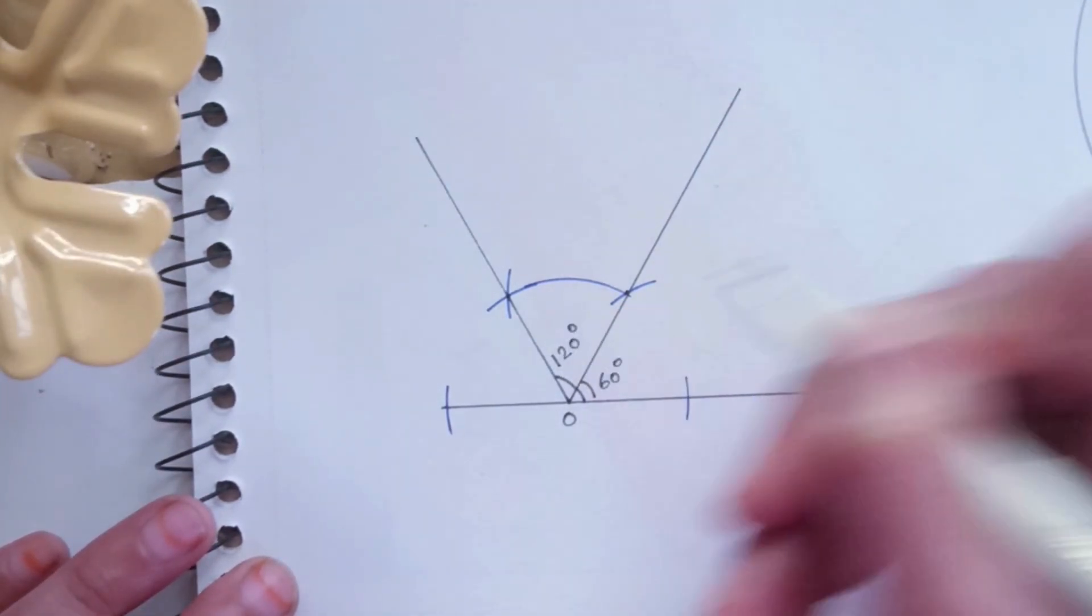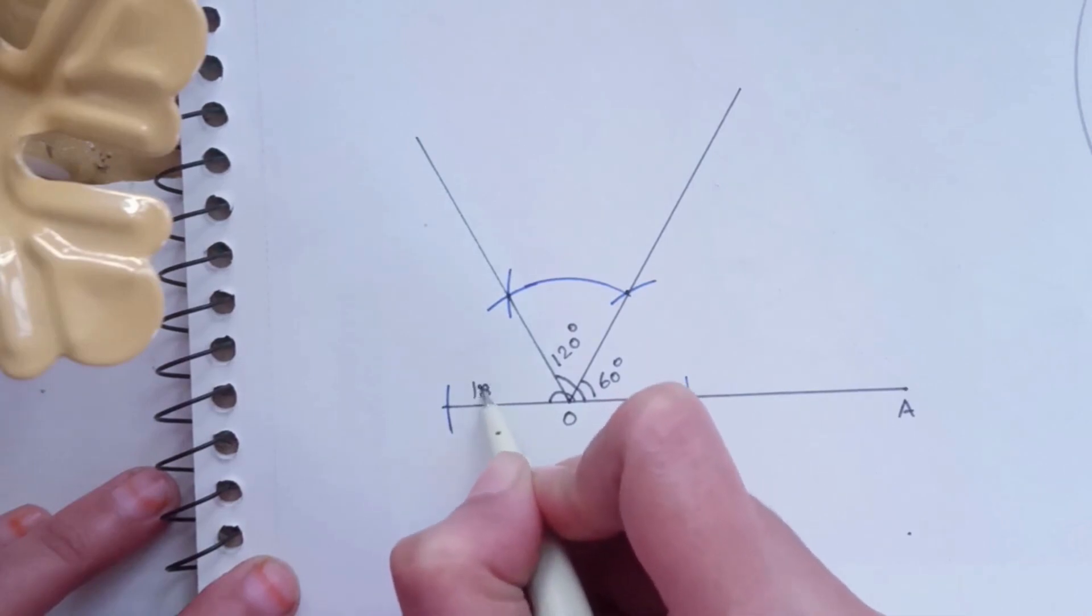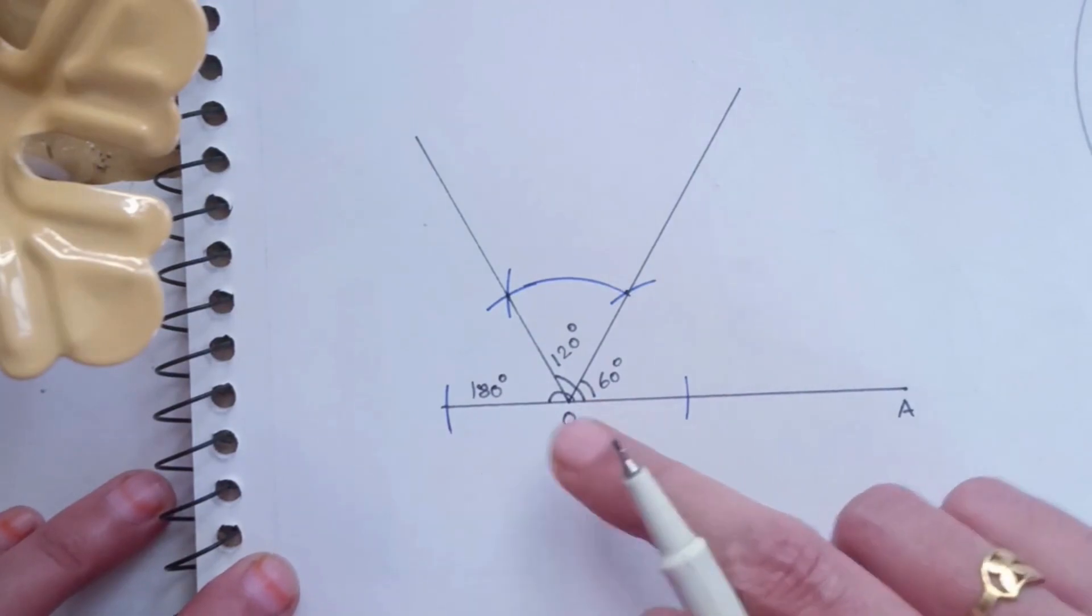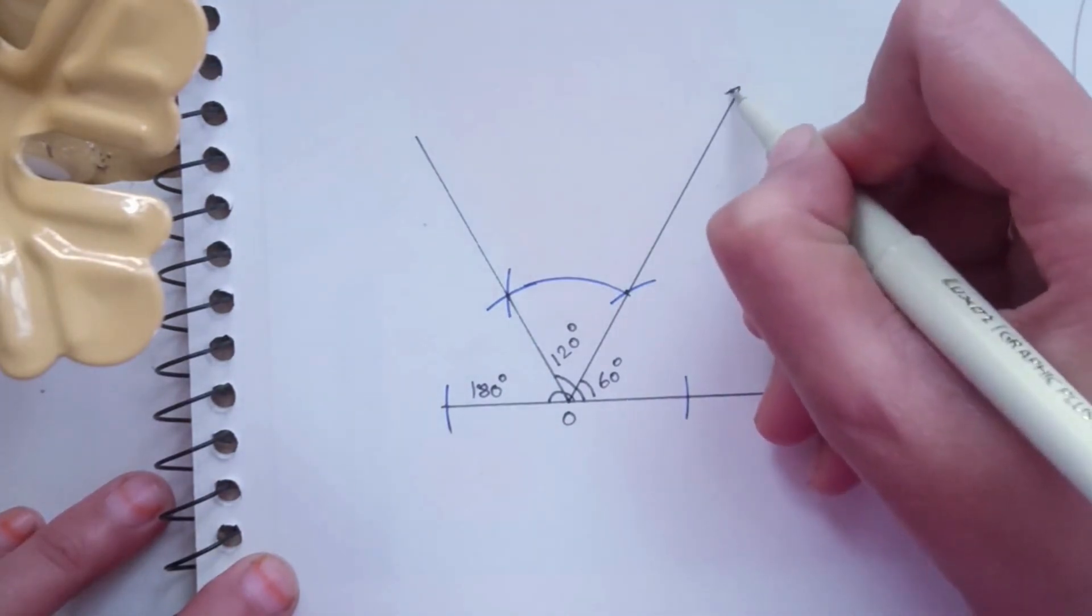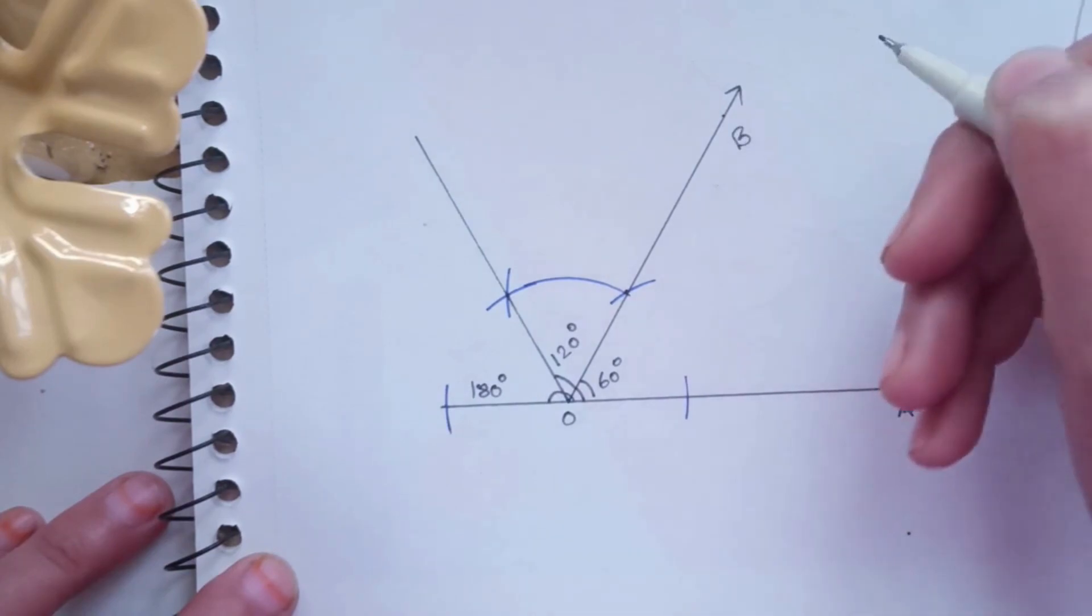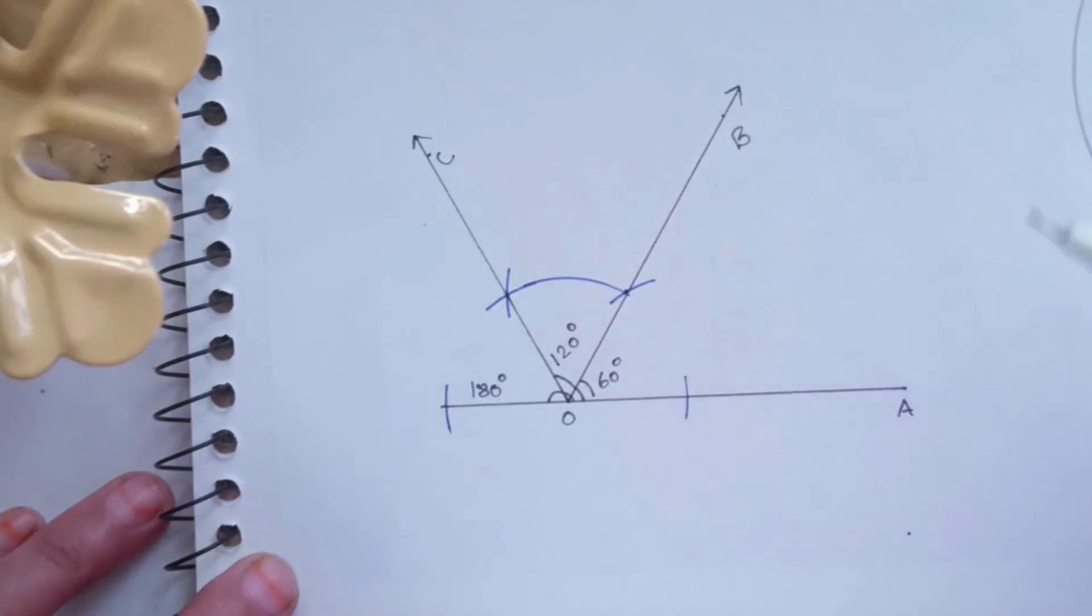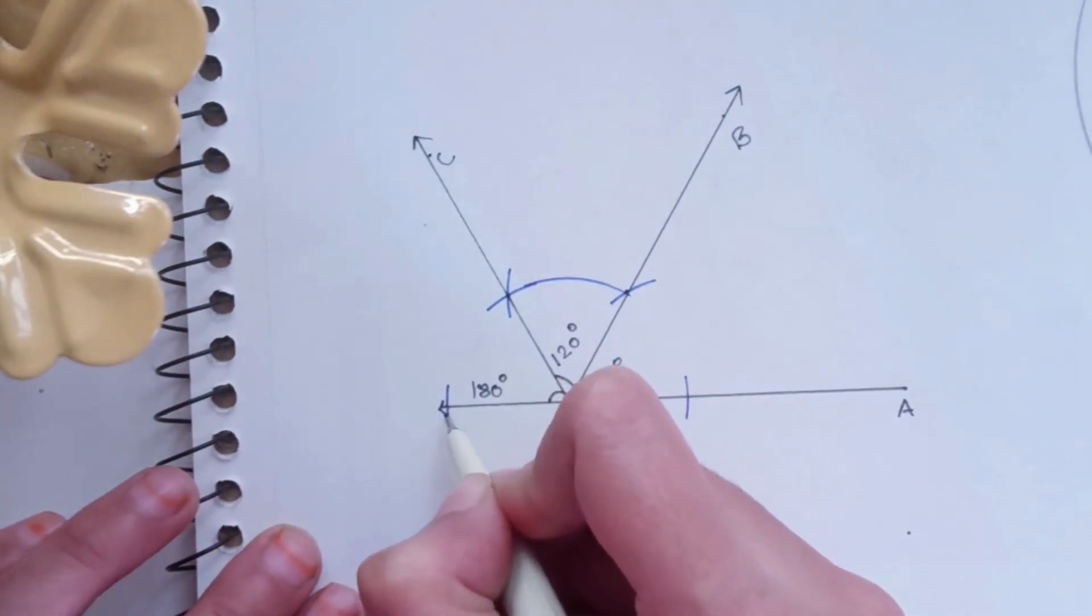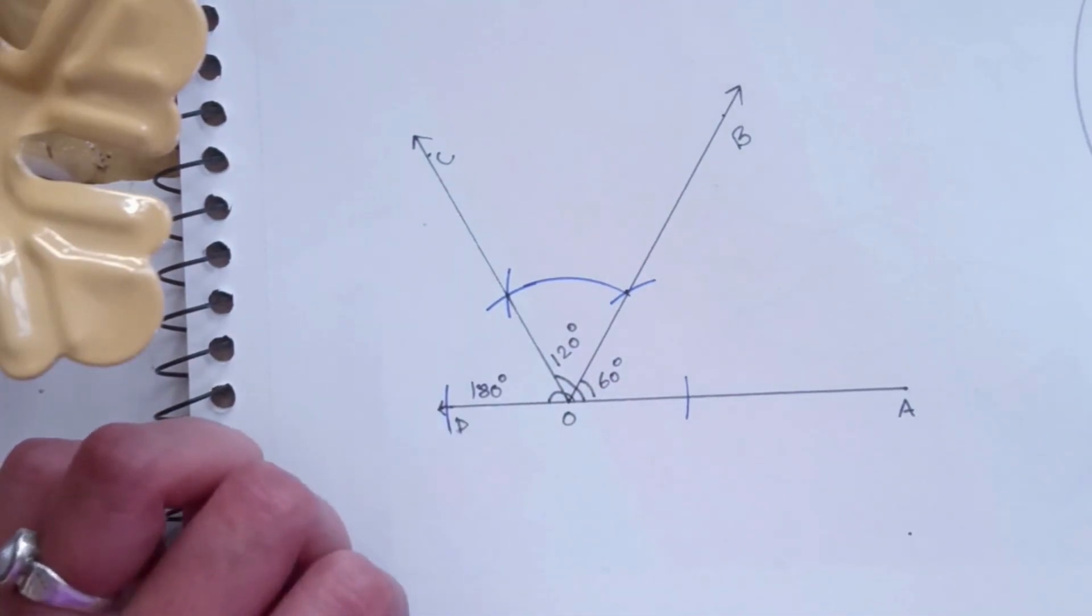And the third angle by default which we get on the line is the 180 degrees angle, because it is thrice that of 60 degrees. So let us name these lines as OB for the 60 degree line, OC for the 120 degree line, and let's name the last point as OD for the 180 degree line. So in this way we get three angles of 60 degrees, 120 degrees, and 180 degrees.